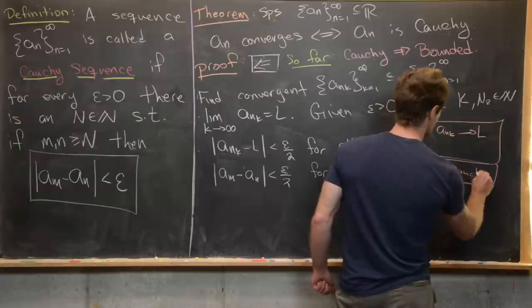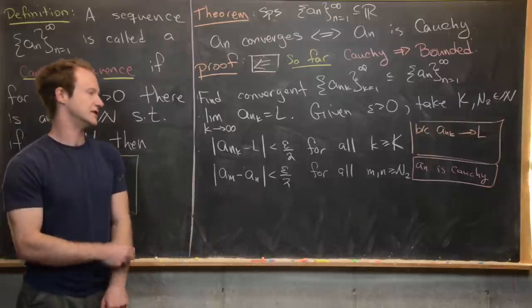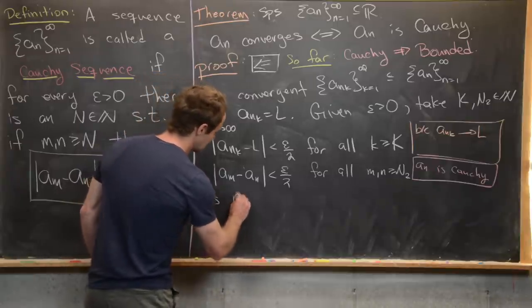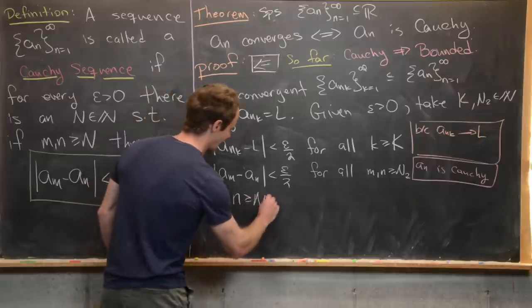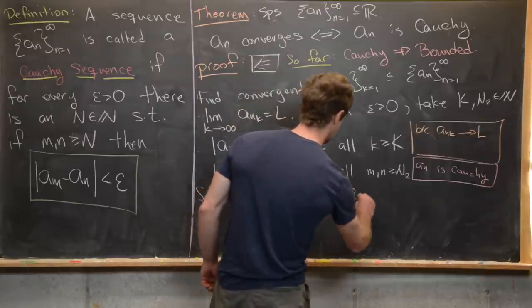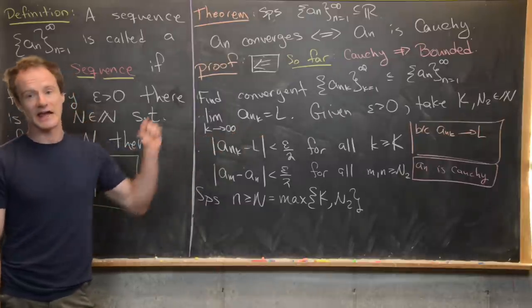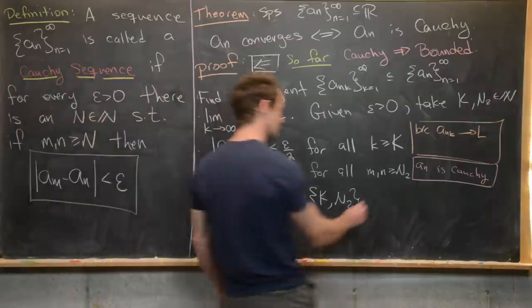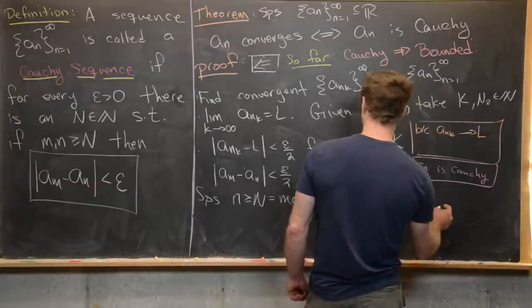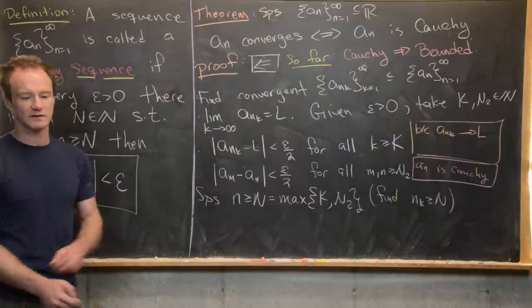Since a_n is Cauchy we can put elements as close together as we want — here epsilon/2. Let n ≥ N = max(K, N₂). Since n_k is an increasing sequence of natural numbers it is unbounded, so we can find one of those elements n_k ≥ N. Now apply the triangle inequality.